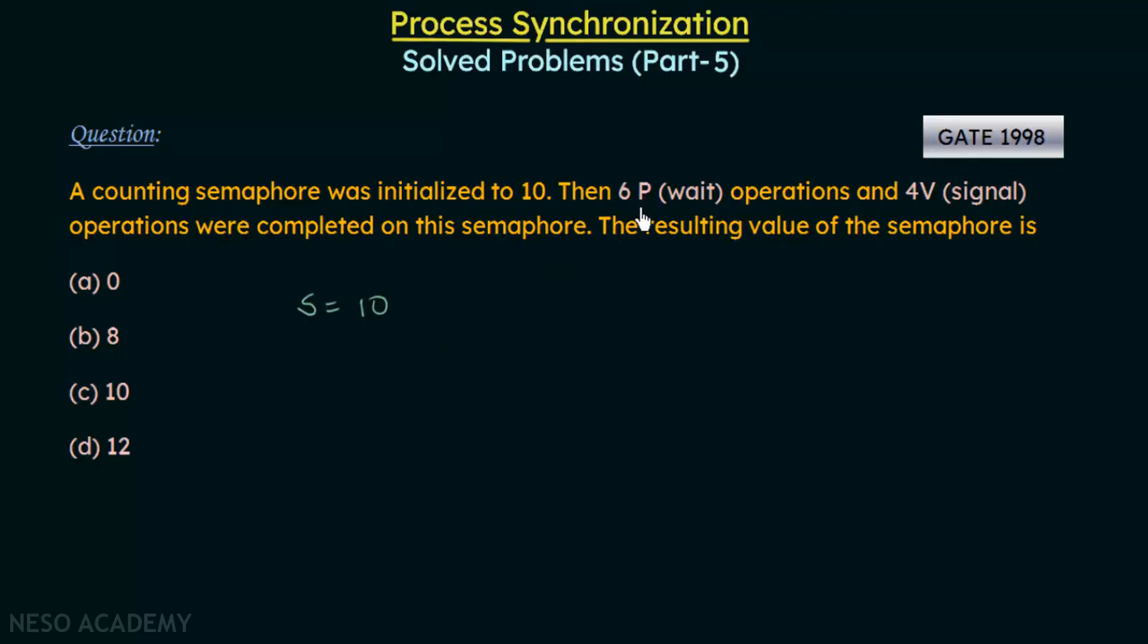And then we see that six P operations are performed. What is the meaning of P? We already saw P means wait, and whenever P is performed, we saw that there is a decrement of S by 1. There will be minus 1 to this. It is performed six times: 2, 3, 4, 5, 6. From 10 we subtract 6. What do we get? The resulting value is equal to 4.